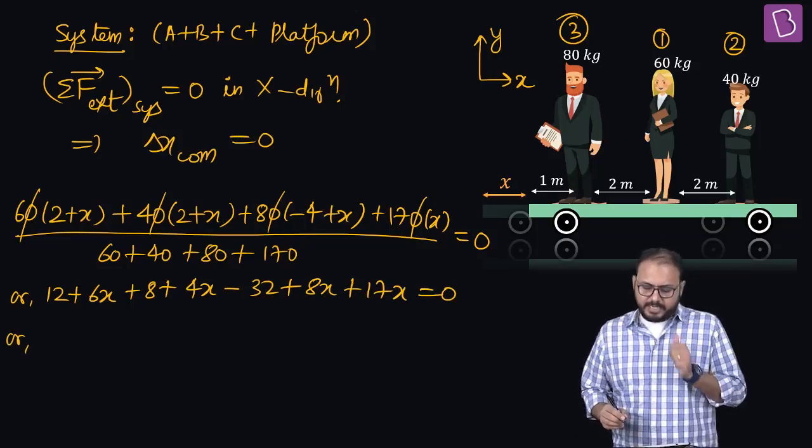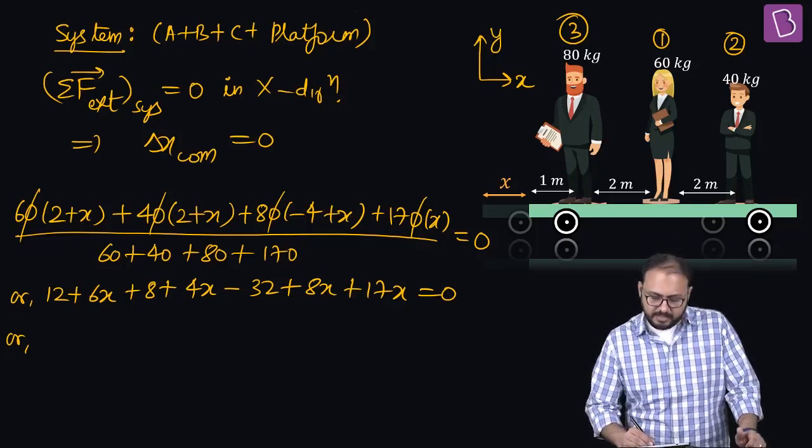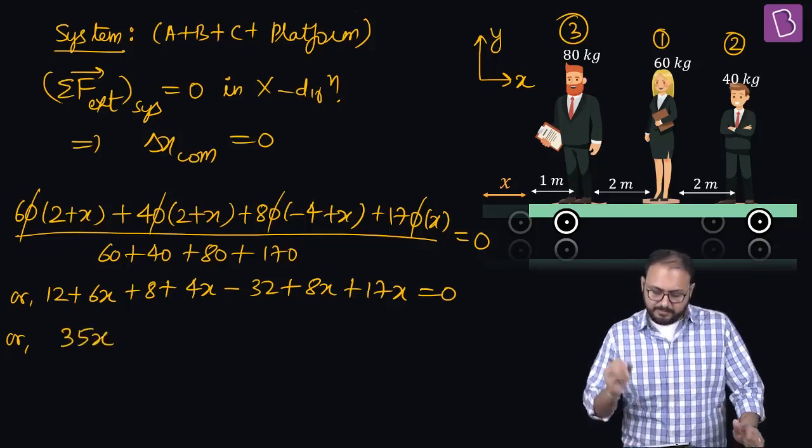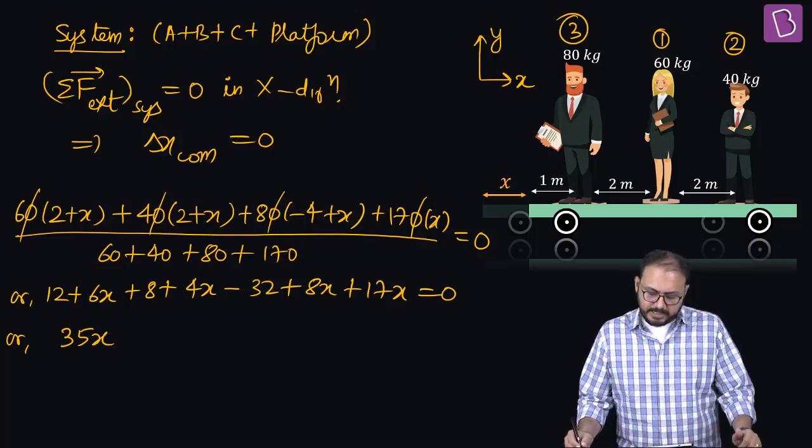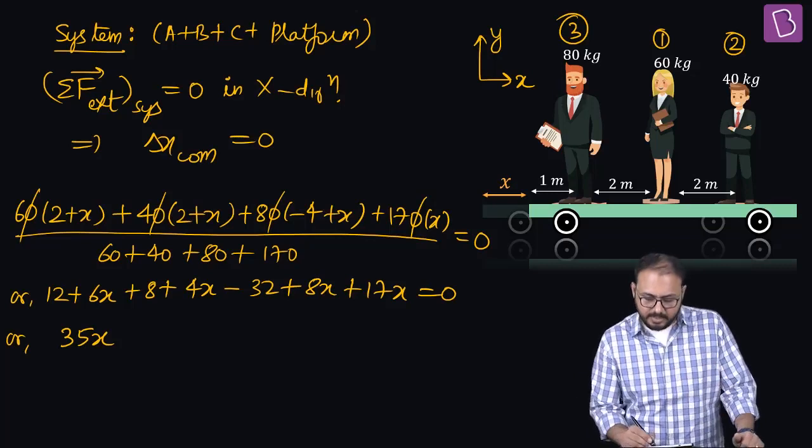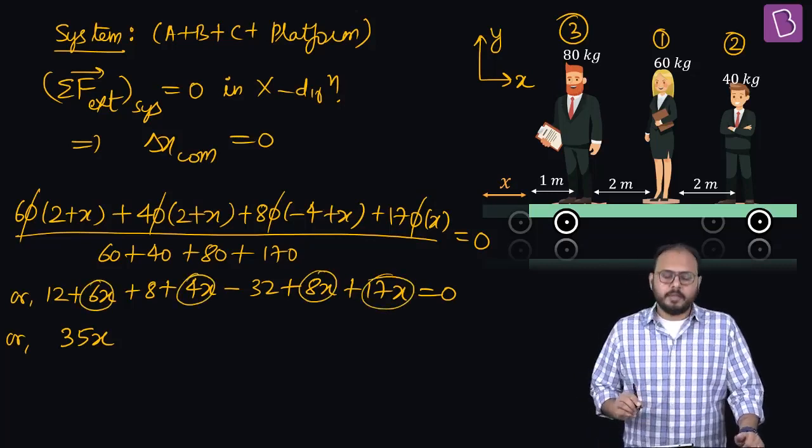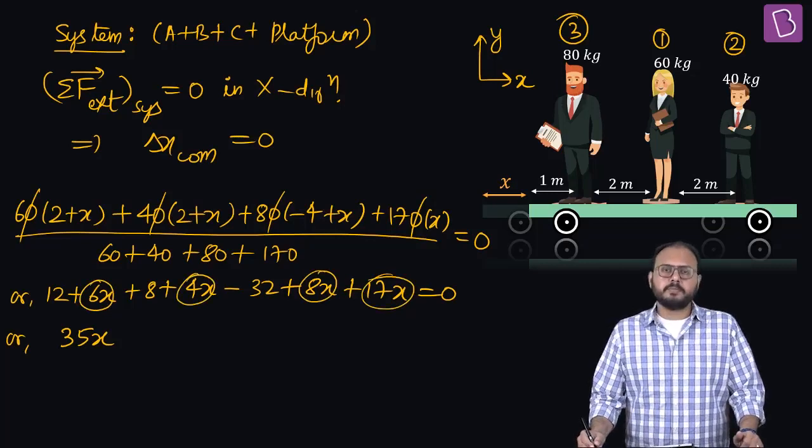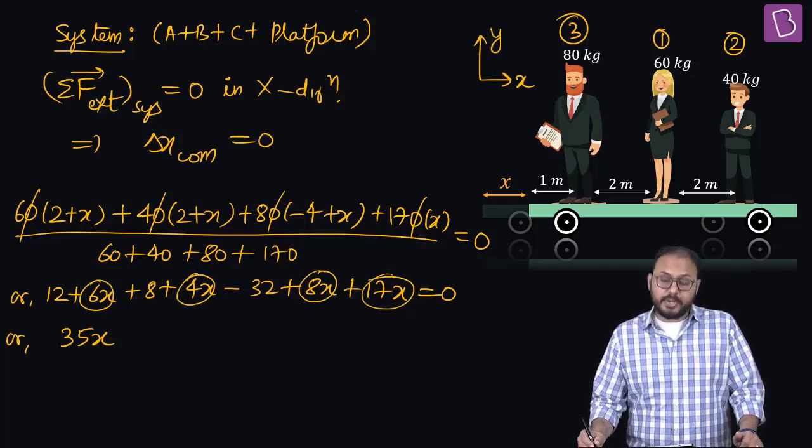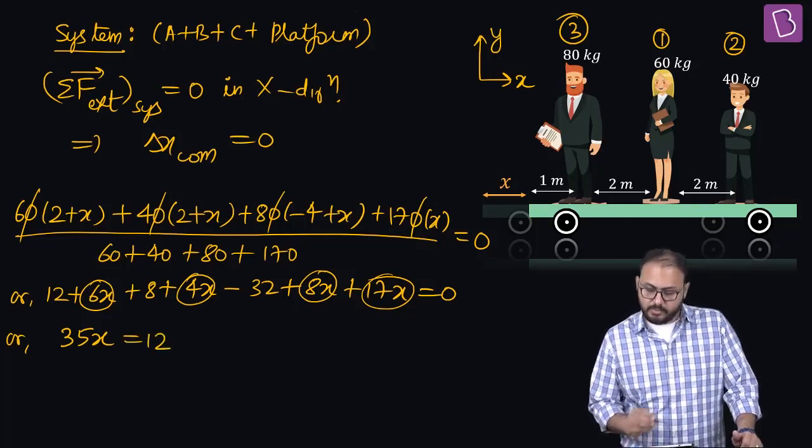6 plus 4 is 10, plus 8 is 18, plus 17 is 35. 35x - all the x terms. Remaining: 12 plus 8 is 20, minus 32 is minus 12.